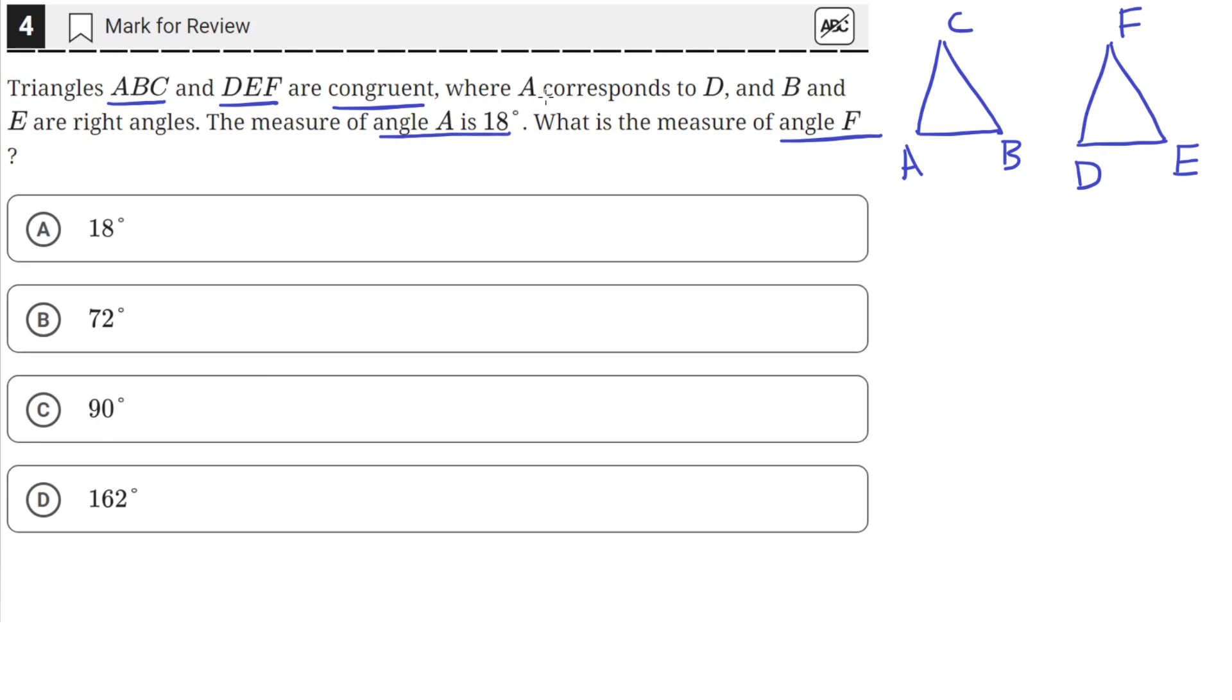The problem statement tells us that A corresponds to D, and B and E are right angles. So B is going to be 90 degrees, and E is also going to be 90 degrees.